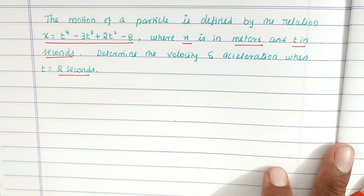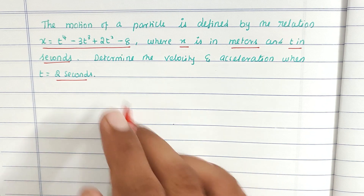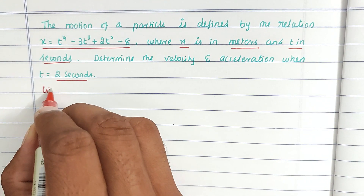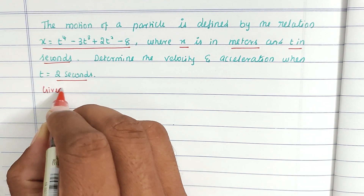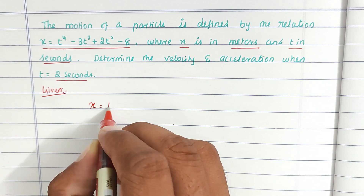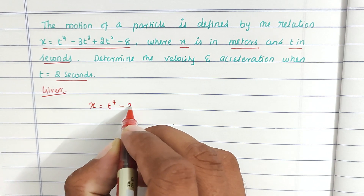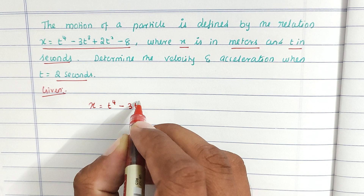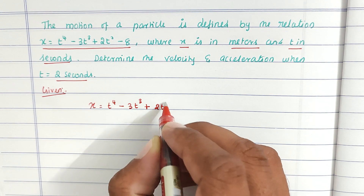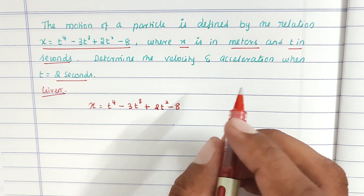We have to find out the velocity as well as acceleration. Given: x equal to t power 4 minus 3t cube plus 2t square minus 8. This is the equation of motion.